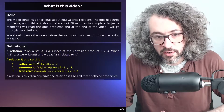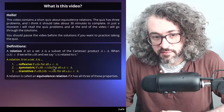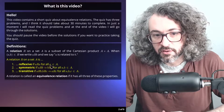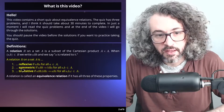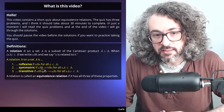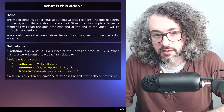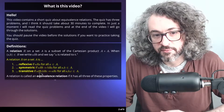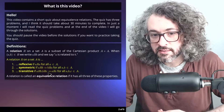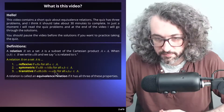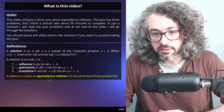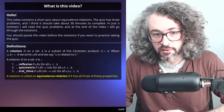A relation R on a set A is reflexive if a is related to itself for all elements a in the set A. It's symmetric if whenever a is related to b, then b is related to a. And it's transitive if whenever a is related to b and b is related to c, then a is related to c. A relation is called an equivalence relation if it has all three of these properties.